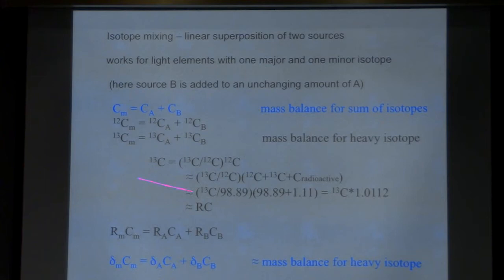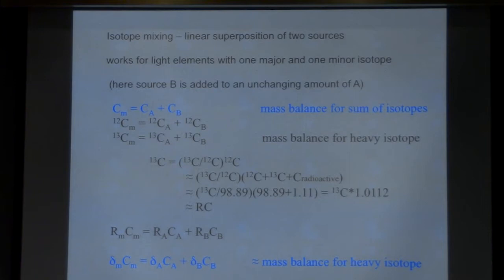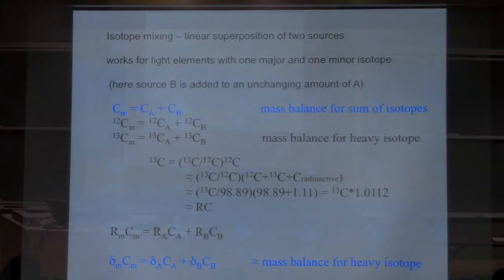This C13 approximation introduces an error of about 1%. Putting that approximation into the equation lets us estimate C13_measured as an isotope ratio times total CO2 measured, which can be pushed through the delta equation. So there is an approximation in using this equation — this is the mass balance for the C13 isotope of CO2. These two blue equations are the equations used in a two-end-member mixing model called the Keeling plot. Each term has an error of about 1%, but they all go together. This works well for a system with a major and minor isotope without many others.